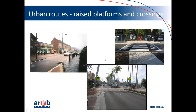Away from intersections, on urban arterials, we're putting in place raised platforms and raised crossing points — raised pedestrian crossings. These are designed to around about a 30 km/h design speed so that if a collision occurs with a pedestrian, it won't result in death and serious injury, or certainly a lesser chance of that. We're seeing quite large reductions in speeds — up to about 25 kilometres per hour from this treatment — and quite substantial reductions in death and serious injury, around the 40% mark.